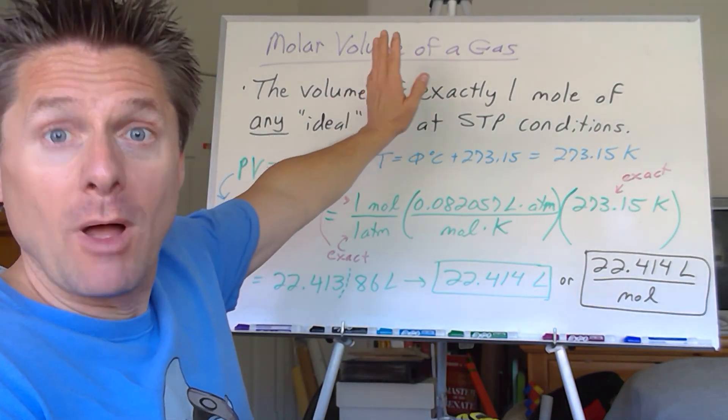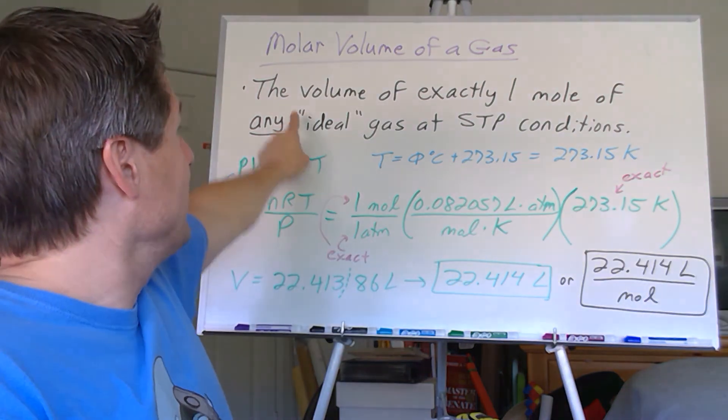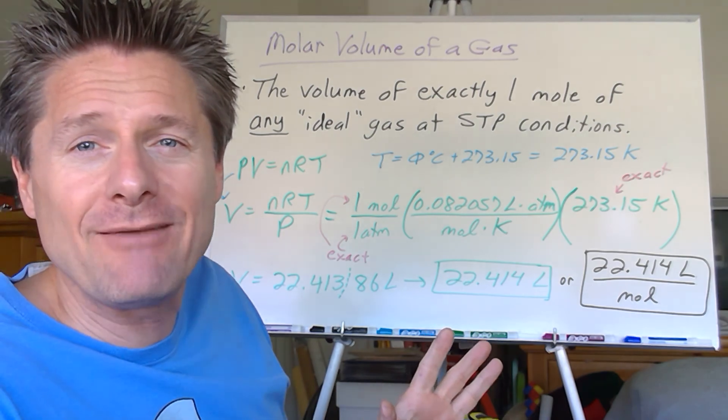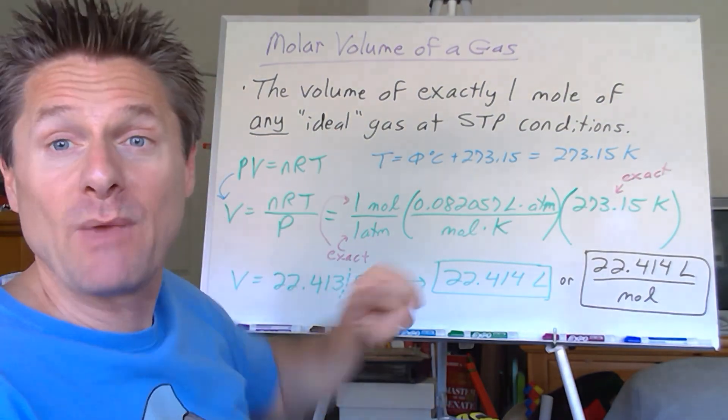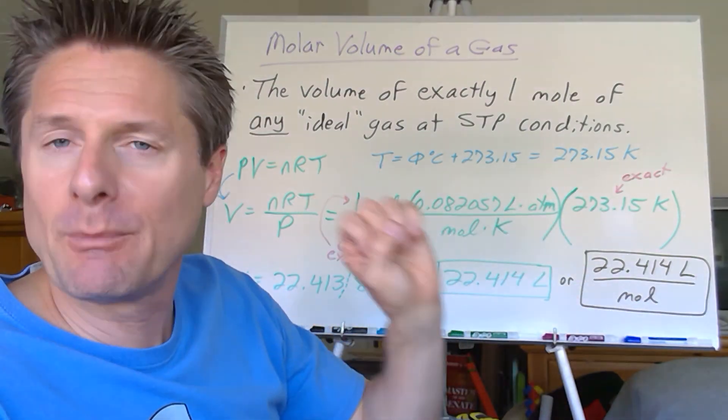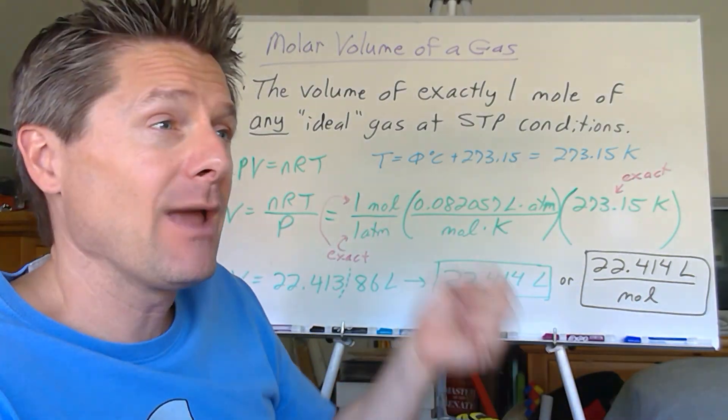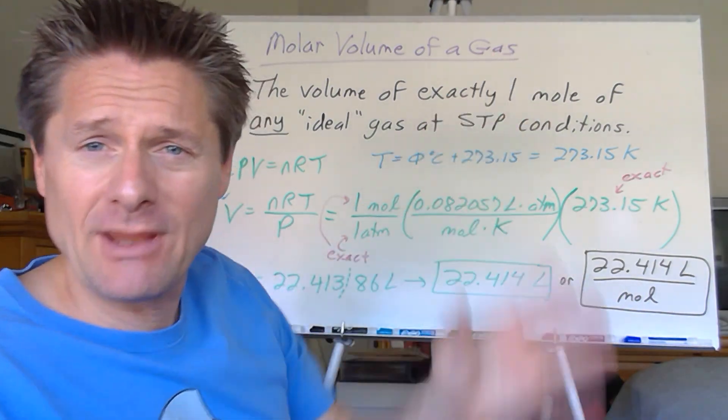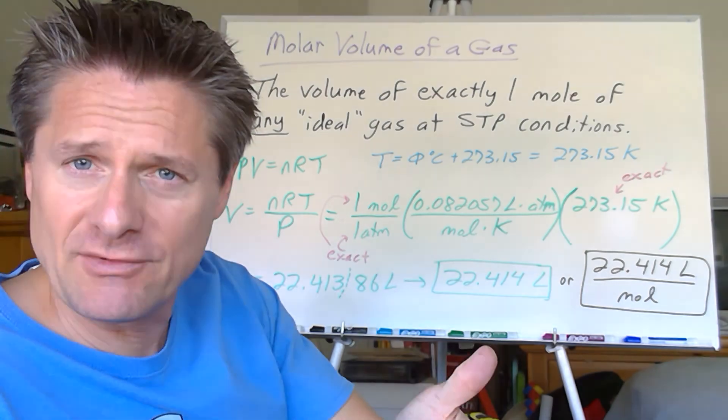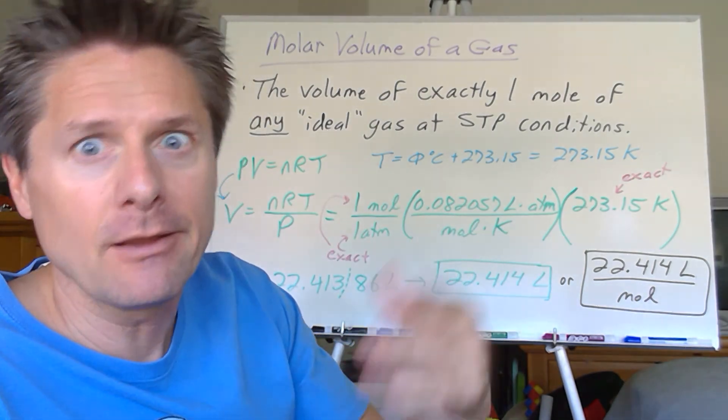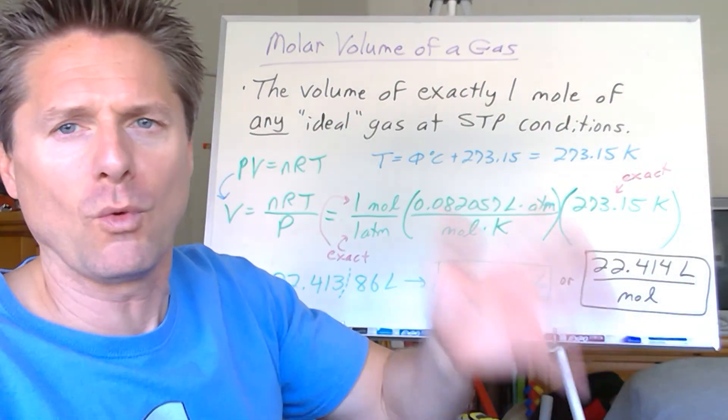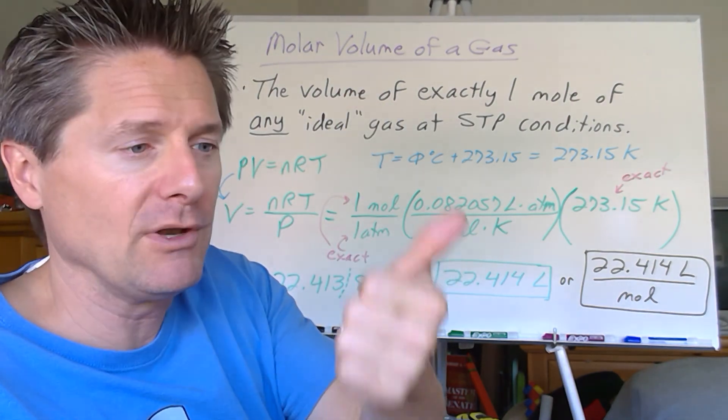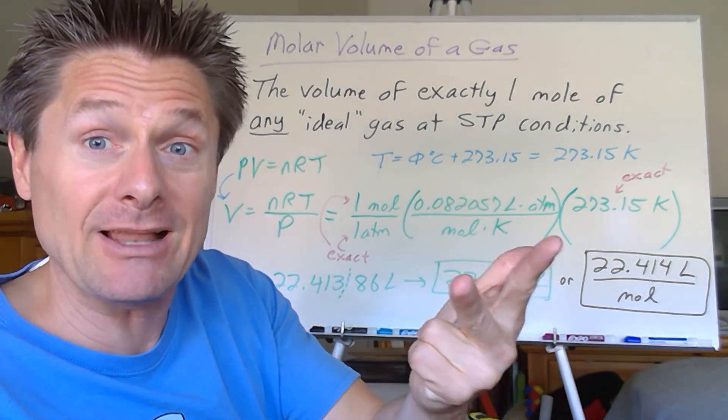So what is molar volume of a gas? Let's assume exactly one mole of any gas. It does not matter what the identity of the gas is if we're assuming ideal gas behavior. So if we're at standard temperature and pressure conditions, zero degrees Celsius exactly, one atmosphere exactly, and we have exactly one mole, we know the moles, we know the pressure, we know the temperature exactly, solve for the volume.